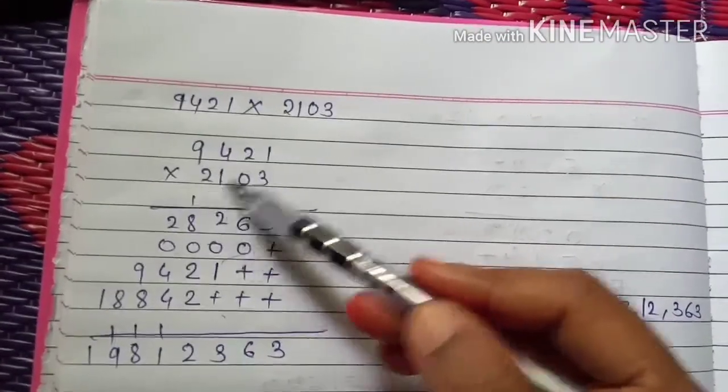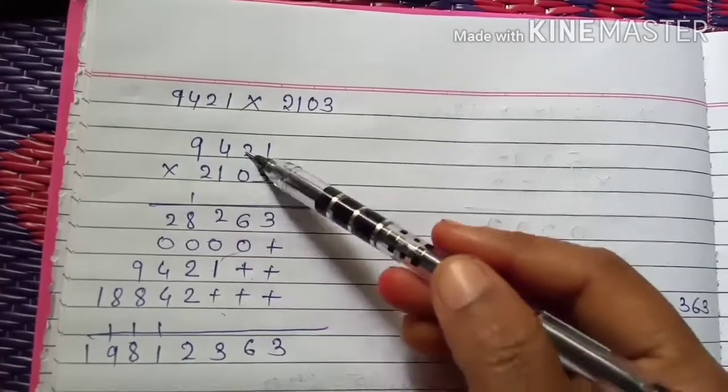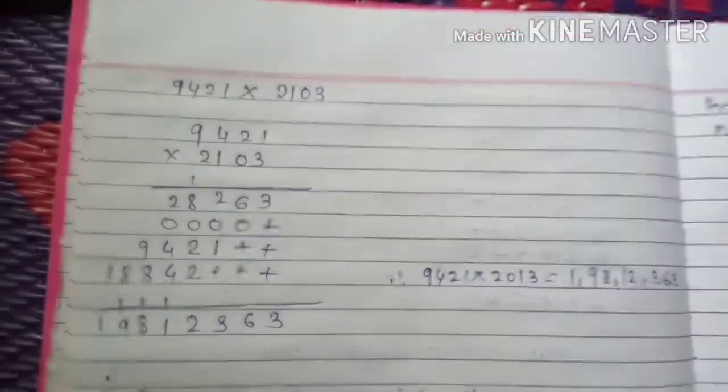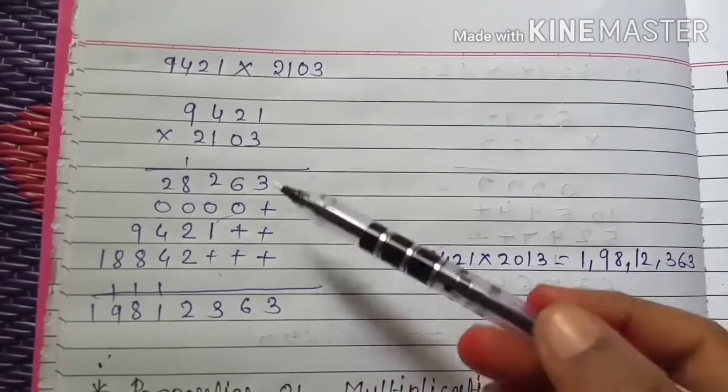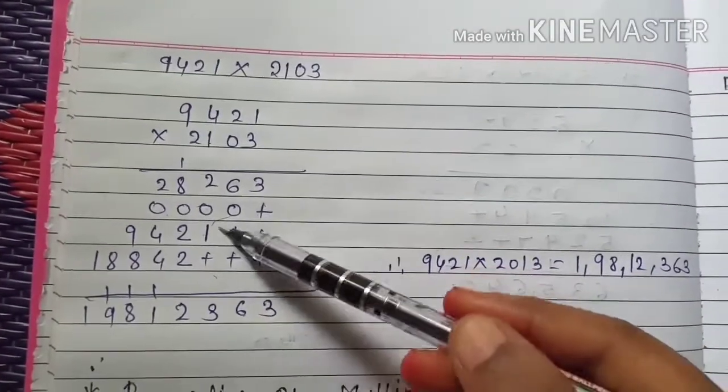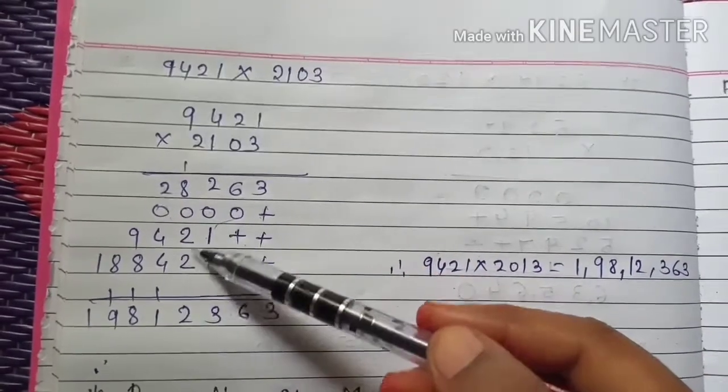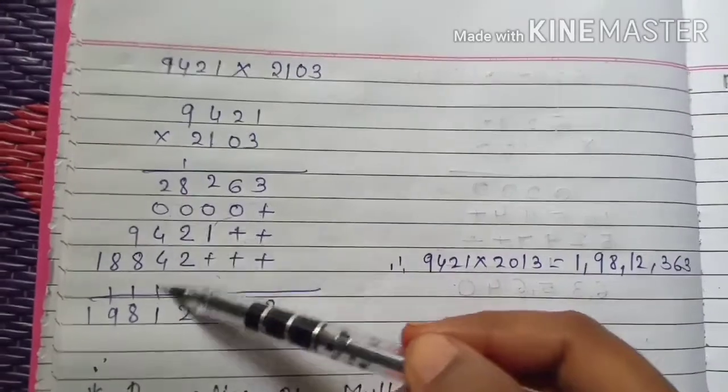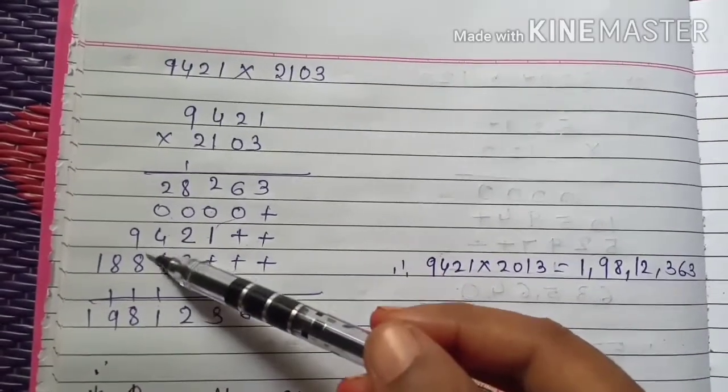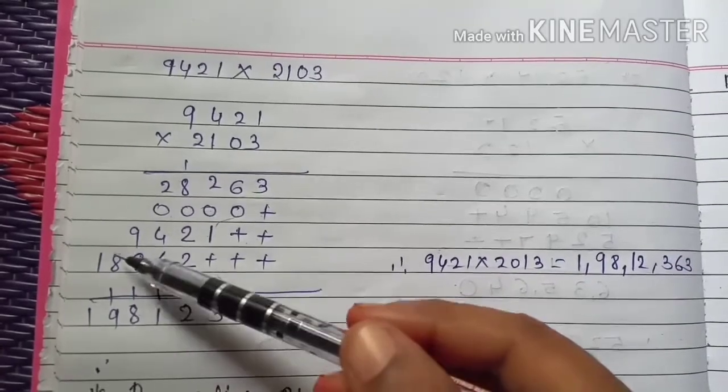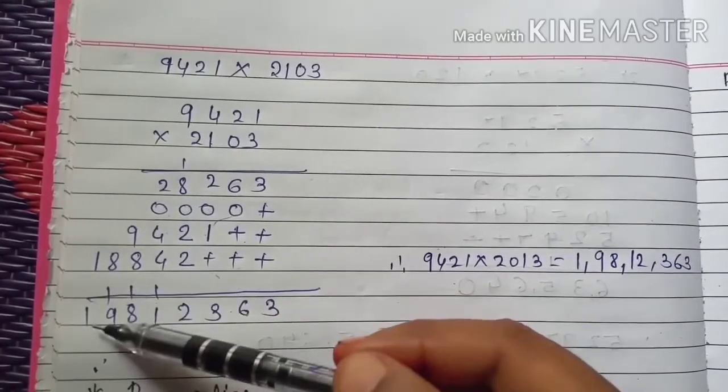2 into 1 is 2, 2 into 2 is 4, 2 into 4 is 8, 2 into 9 is 18. Then start adding. 3 is to 3, 6 plus 0 is 6, 2 plus 2 plus 1 is 3, 8 plus 4 is 12, 4 plus 4 is 8, 8 plus 1 is 9, 9 plus 2 is 11, 8 plus 9 is 17, 17 plus 1 is 18, 8 plus 1 is 9, and 1.